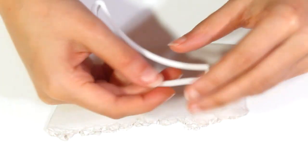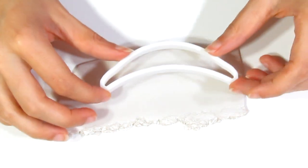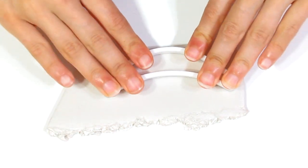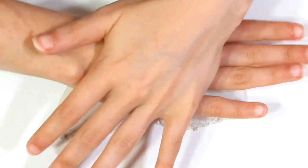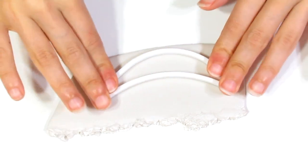I've got a piece of pearl white here rolled out on my thickest setting of my pasta machine, and I've got this really small bib cutter. Any small one will work. I'm just going to take that and cut out the shape of my piece.